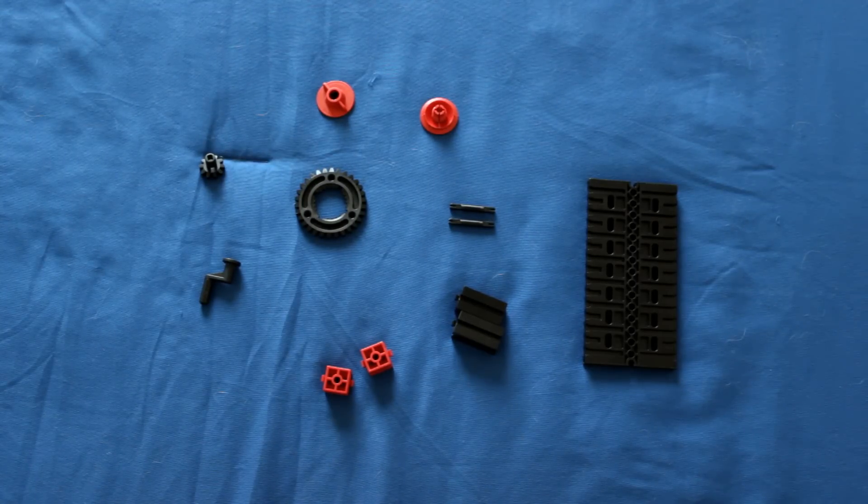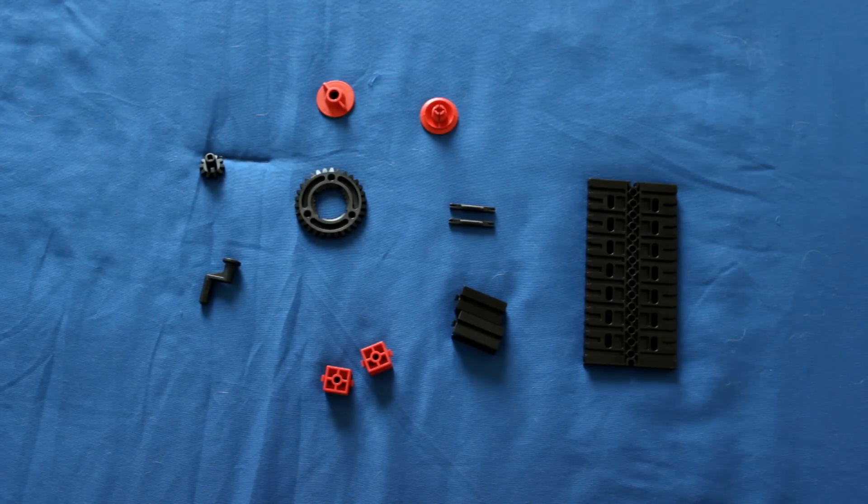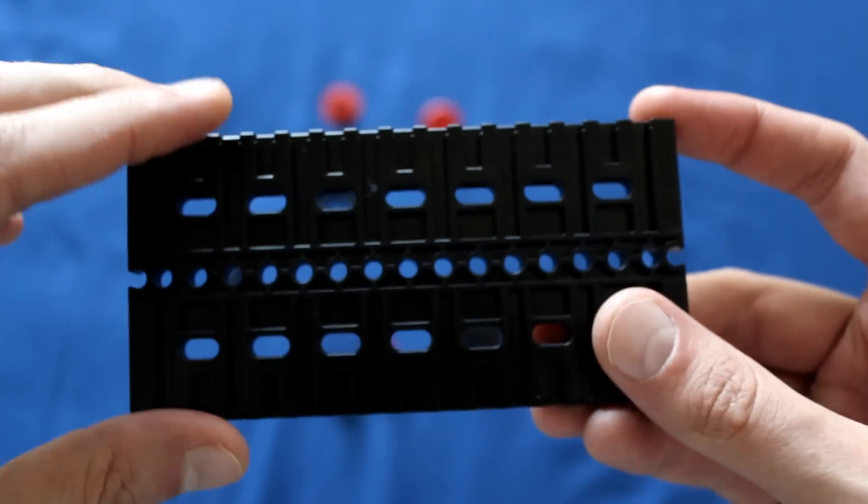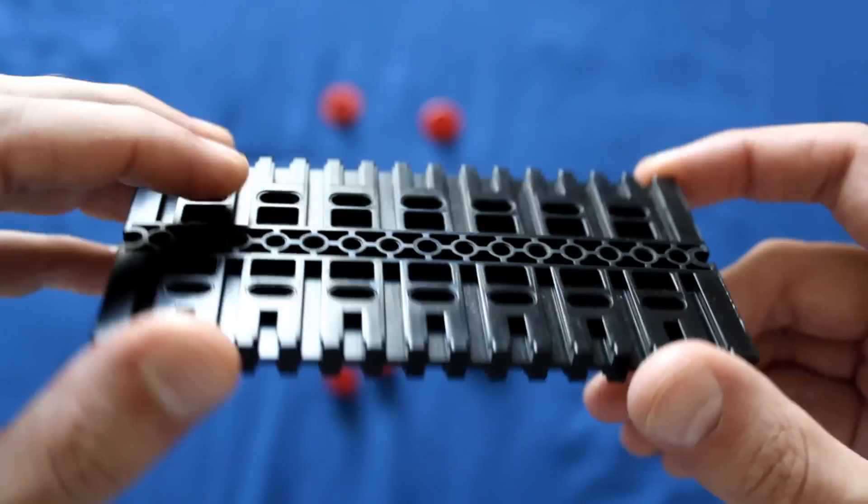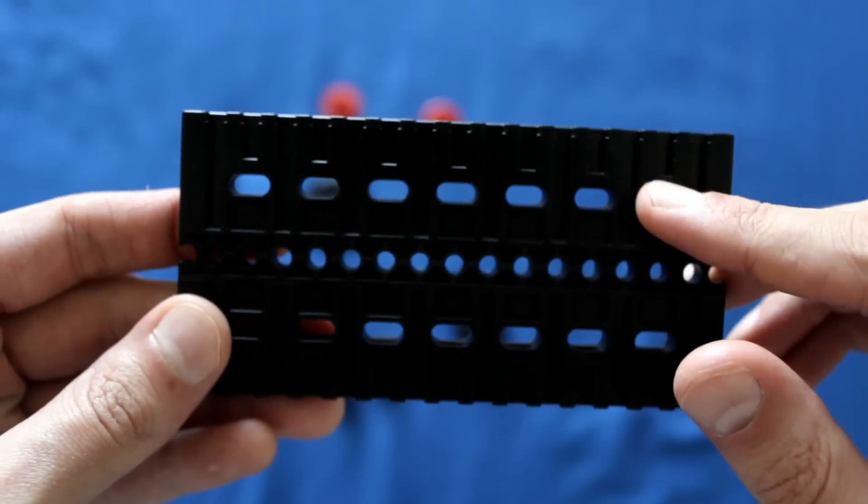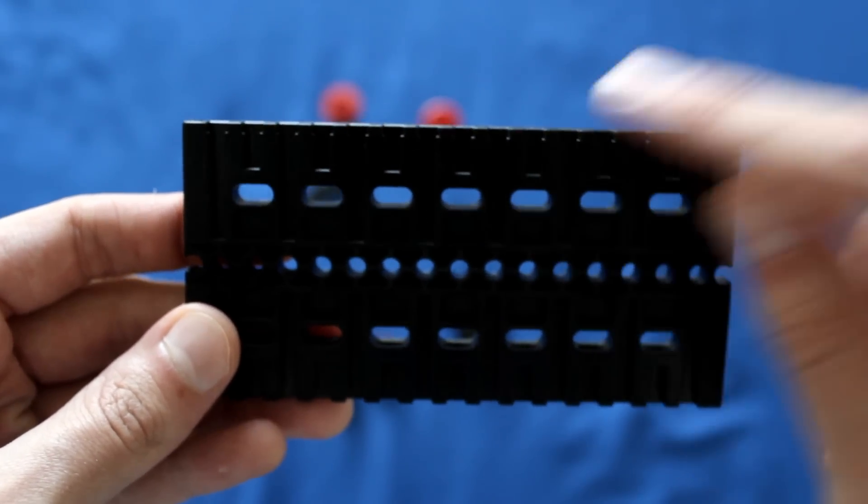In order to build this model and follow along in the video, you'll need the parts that you see laid out on my table here. The first thing you'll need is the base plate 120x60. You only need one of these. To figure out which one is 120x60, look at these larger holes on the top and bottom sides. There should be 7 of them.